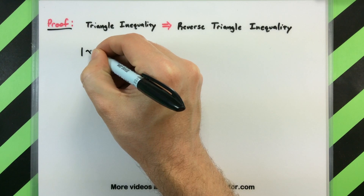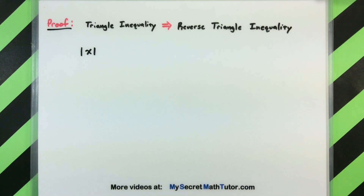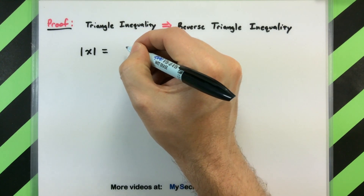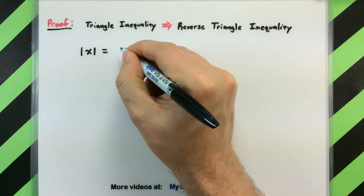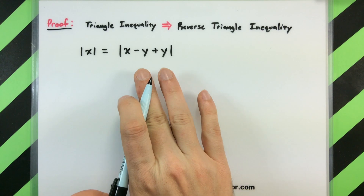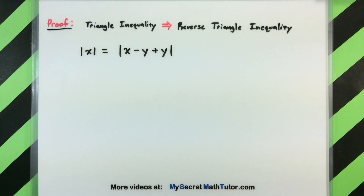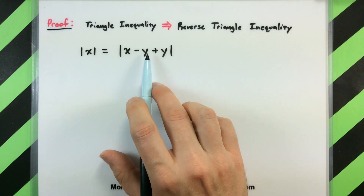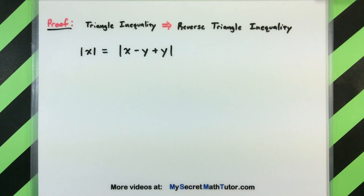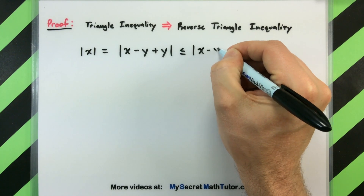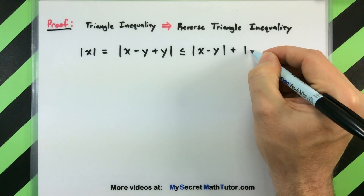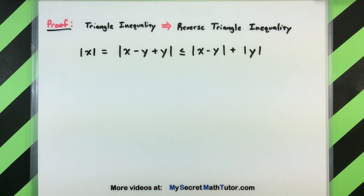The first thing we're going to do is start off with the absolute value of a number, something like the absolute value of x. I'm going to take that x and add and subtract a value of y — so minus y and plus y. Since I'm adding and subtracting the same quantity, this is exactly the same so far. But now we're dealing with x minus y as one quantity and y by itself as another quantity being added. Here's where I can use the regular old triangle inequality: this is less than or equal to the absolute value of x minus y plus the absolute value of just y.